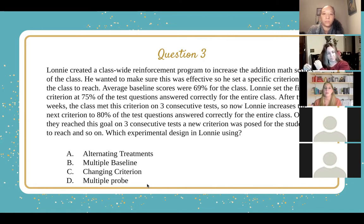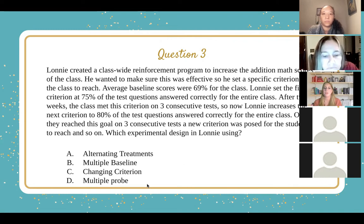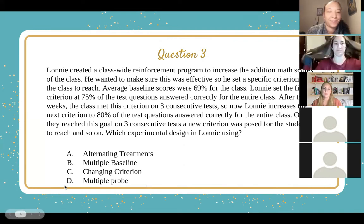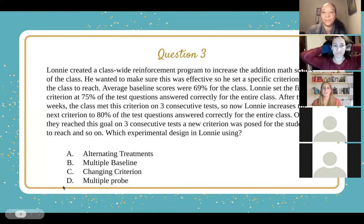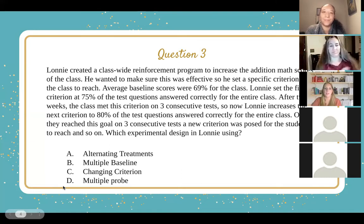A, alternating treatments. B, multiple baseline. C, changing criterion. Or D, multiple probe. The answer here is C, changing criterion design.